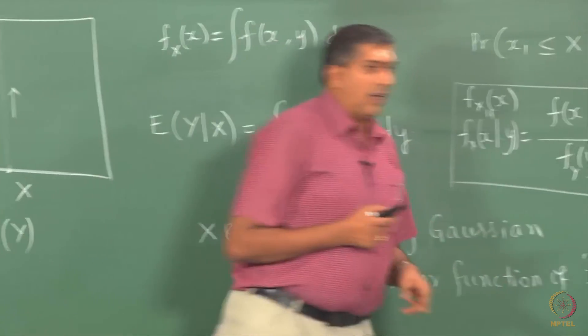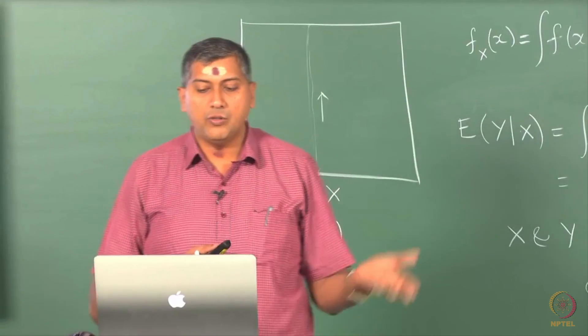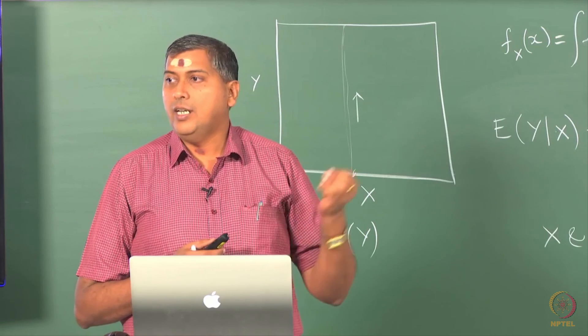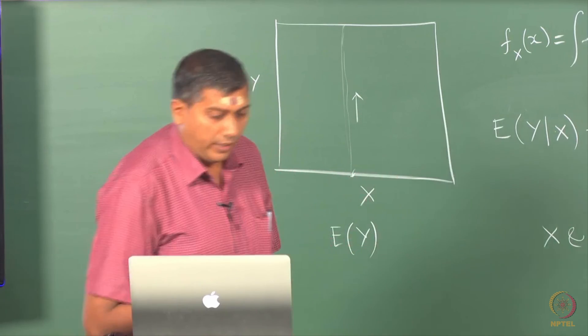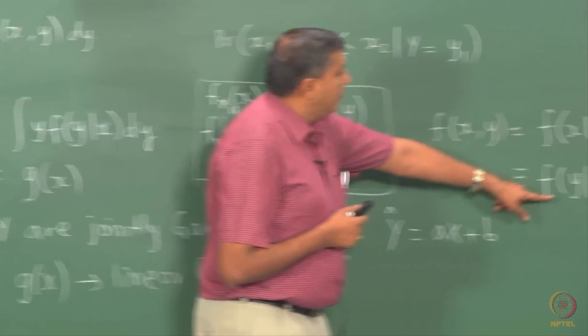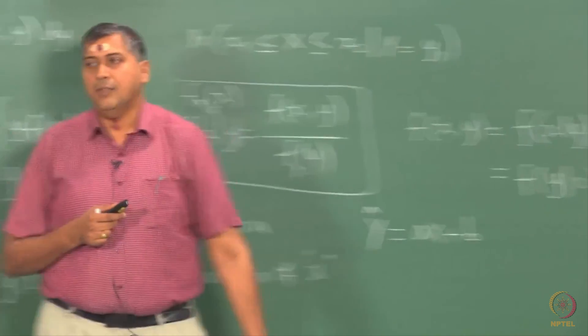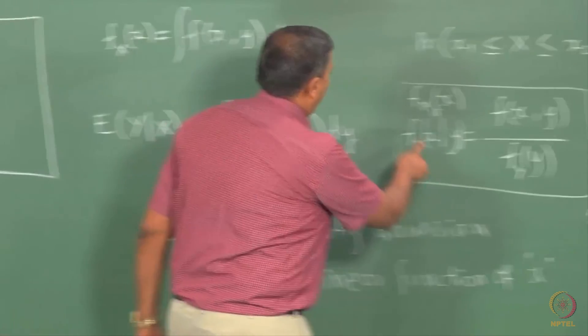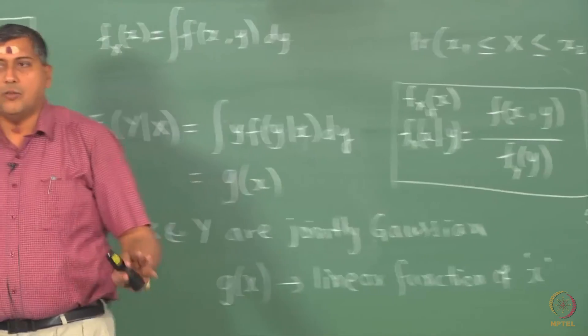And you can write this result in many, at least in two different ways. One way is what you see on the slide, that the joint density now can be factorized into the product of the individual marginal densities. And that is clear even from this definition. Or the other way of stating independence is the conditional density is the same as the marginal density. Whichever way you write, it is okay.